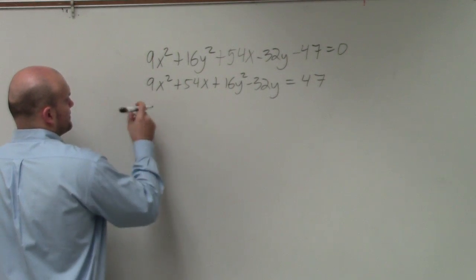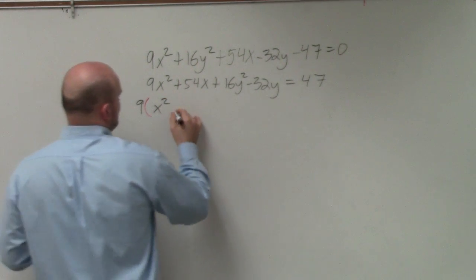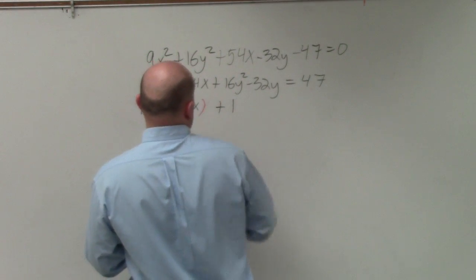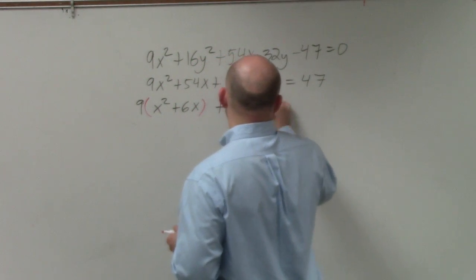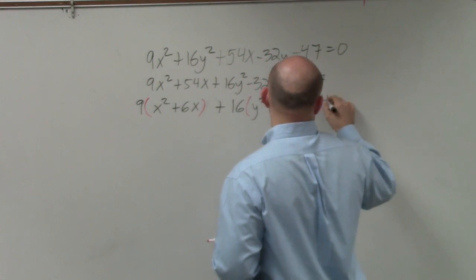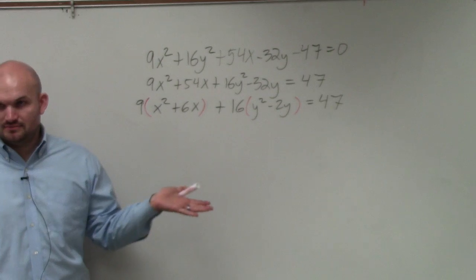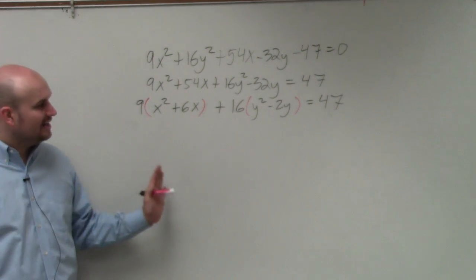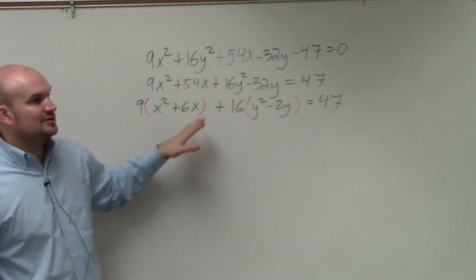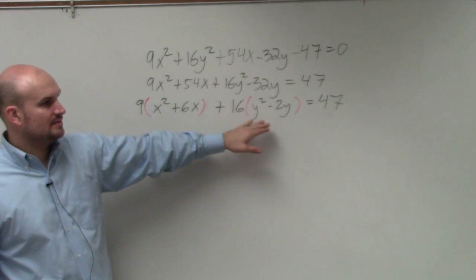When factoring out the 9, I now obtain x squared plus 6x, plus when I factor out a 16, I'm left with y squared minus 2y equals 47. Does everybody see what I have done? I have not done anything to the equation. All I have done is put the 47 over there, rearrange them, and factored out two separate numbers there. You mean 47? Yeah, 47. What did I say, 57? 27.